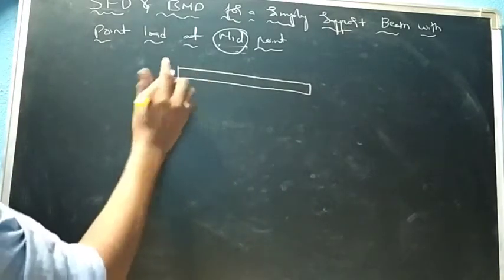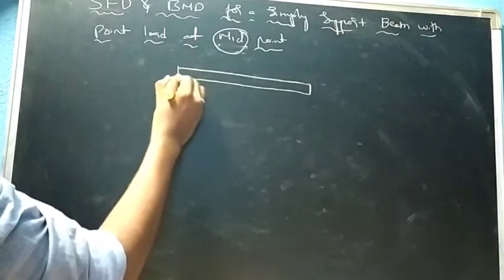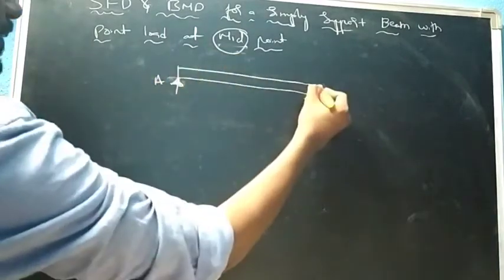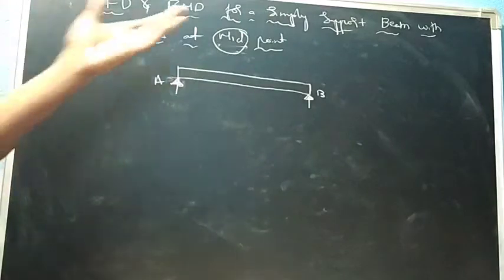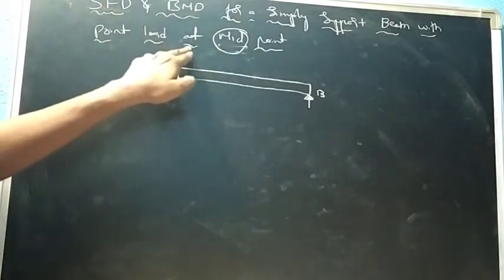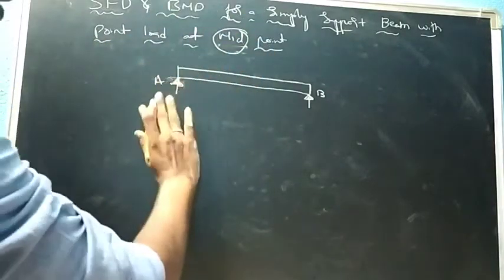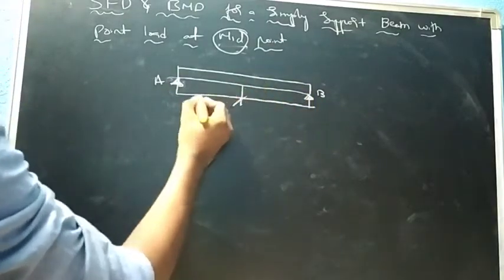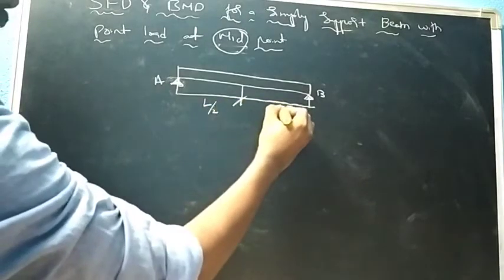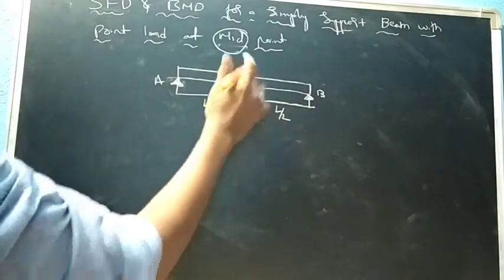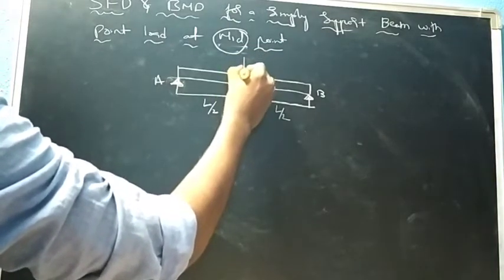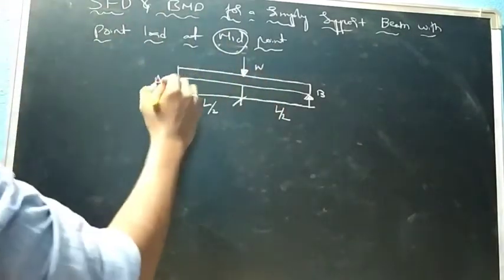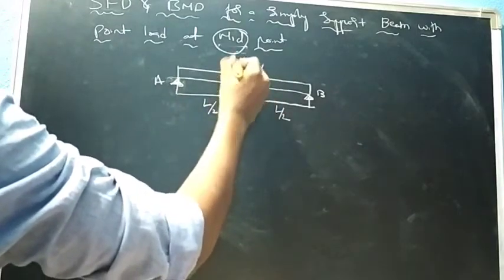Drawing the free body diagram: the beam has a hinge support at A and a roller at B. The point load W acts at point C, which is at the middle of the beam. So each half-span is L/2, giving a total length of L.